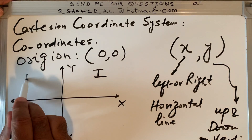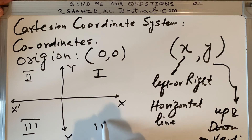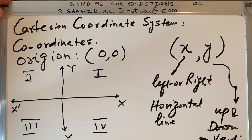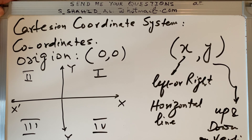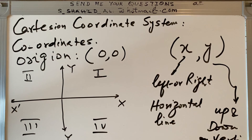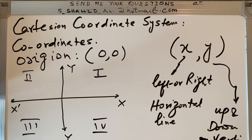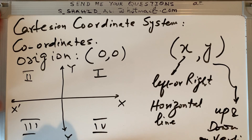This gives us four quadrants. The first, second, third, and fourth. The coordinate system comprises two lines perpendicular to each other — one horizontal called the x-axis and one vertical called the y-axis. Note that 'axis' is singular and 'axes' is plural — so it comprises two axes, x-axis and y-axis, perpendicular to each other, forming four coordinate quadrants.